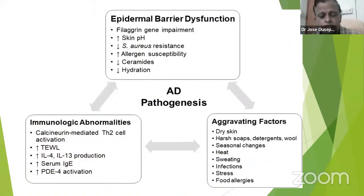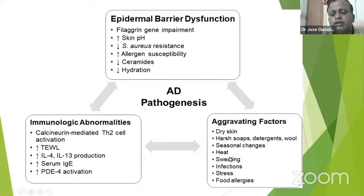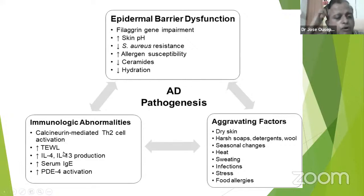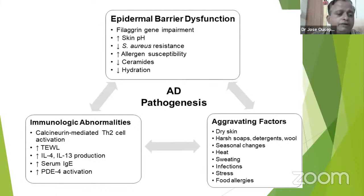Aggravating factors during Atopic Dermatitis include dry skin, harsh soaps or detergents, season changes, stress, infection, and food allergy. Along with epidermal barrier dysfunction, there is increasing dehydration of the skin, immunological abnormalities, increased transepidermal water loss, and increased inflammatory mediator release like interleukin-4, along with increased IgE levels — a vicious cycle due to skin barrier disruption.